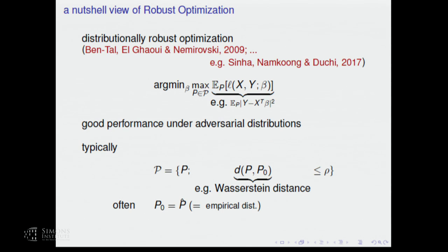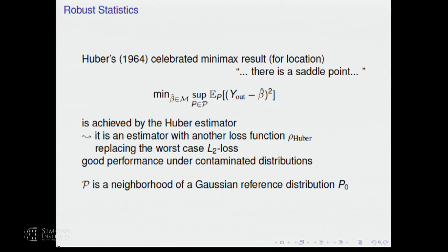Here is a nutshell view of robust optimization — distributionally robust optimization. You have a loss function, data, random variables X and Y, where X are covariates and Y are response variables. I have an unknown parameter beta, and I look at the risk. P is the data-generating distribution. I look at worst-case risk over a class and try to find the parameter which optimizes it. Typically the class is within the Wasserstein distance ball with radius rho around P0, the empirical distribution. This has good performance under adversarial distributions, including adversarial test distributions — where the test sample may differ substantially from training data. This is different from the more classical robust statistics viewpoint.